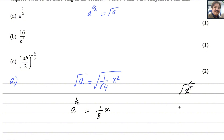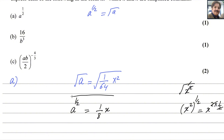The reason is: x squared raised to the power 1 over 2 — power to power is always multiplied — so 2 times 1 over 2 equals 1, and they cancel. That is why the square and square root cancel out. So the first part is done.